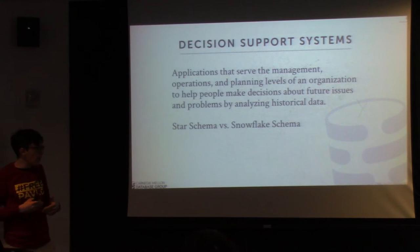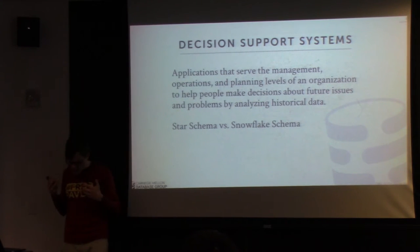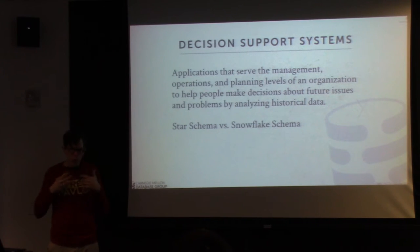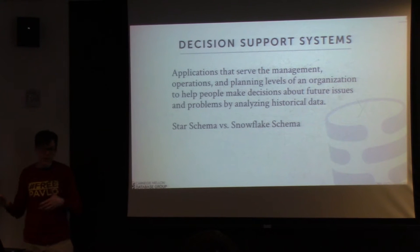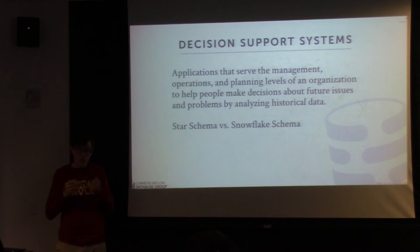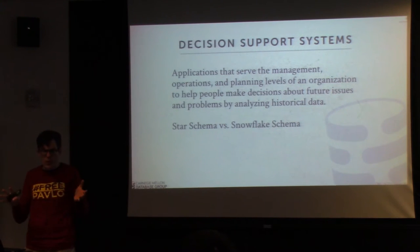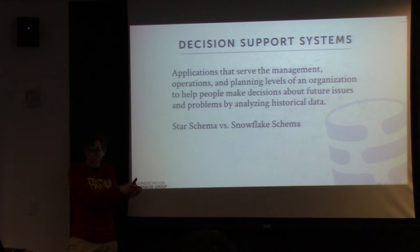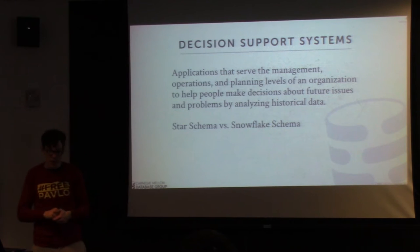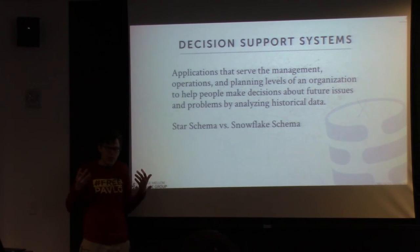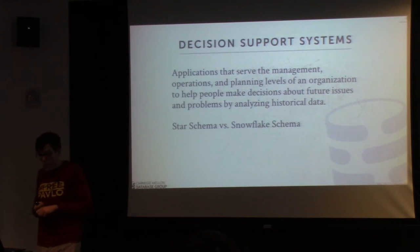A classic DSS example from Mike Stonebraker: say you're Walmart and you have a database of every single item anyone's ever bought. There's a hurricane coming next week hitting Florida. You go back into your historical data and ask: the last time a hurricane hit Florida, what items were bought most in the week before and the week after? You can then tell your suppliers and logistics companies to make sure those products are available at your Florida Walmarts in preparation for that hurricane. This is different from just guessing — oh, people probably need water — you can actually look at the data and know exactly what people bought. That's a great example of what decision support systems are used for.